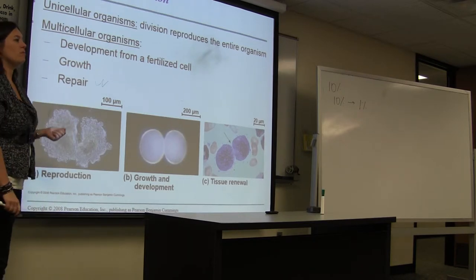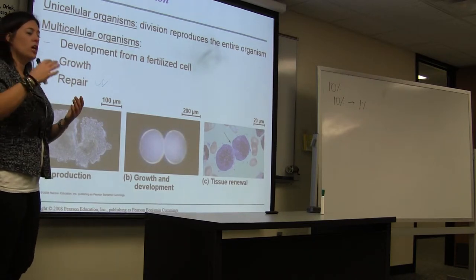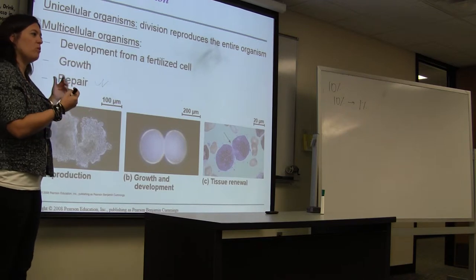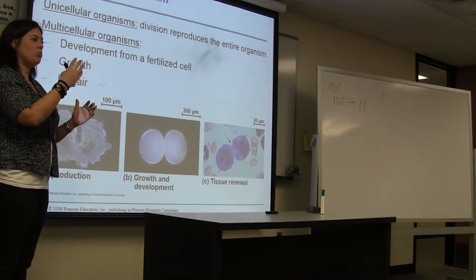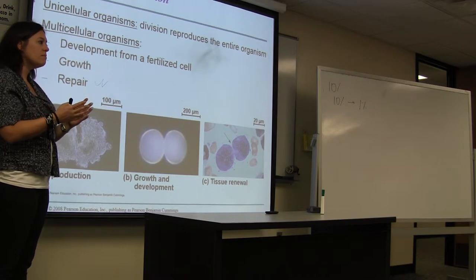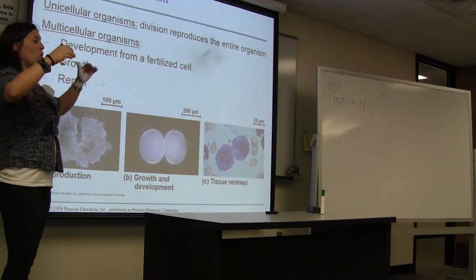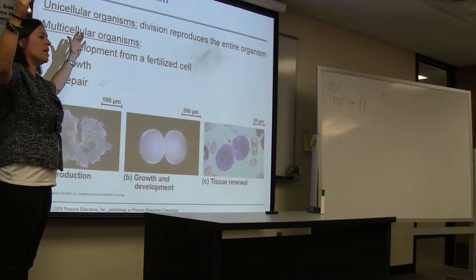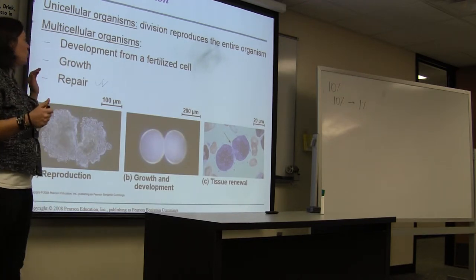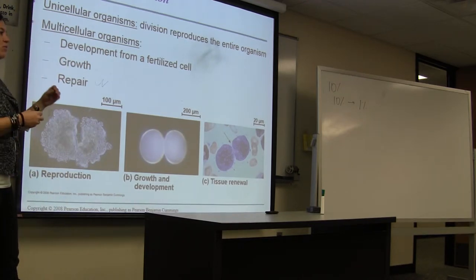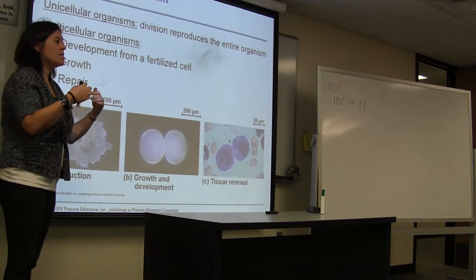One of them is during development. After fertilization occurs, you have the sperm and the egg. The egg gets fertilized. You start with your diploid organism, which is one cell. You obviously have to make a whole bunch more cells in order to end up a grown organism. So development from a fertilized egg is going to involve a lot of these cell divisions.